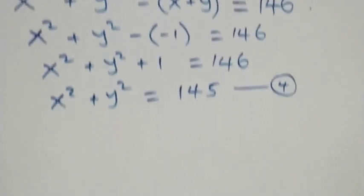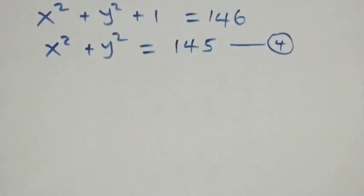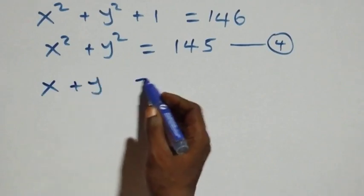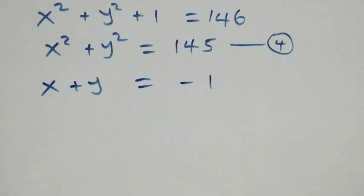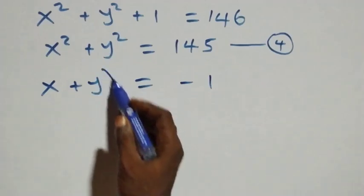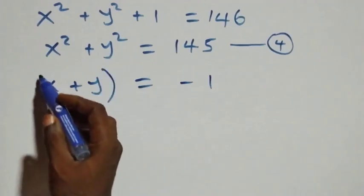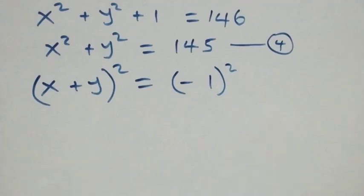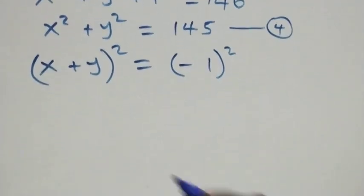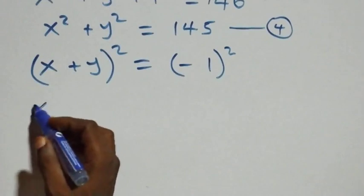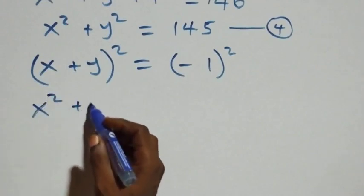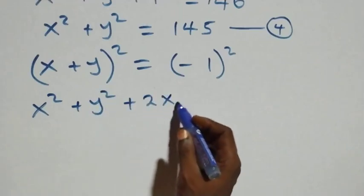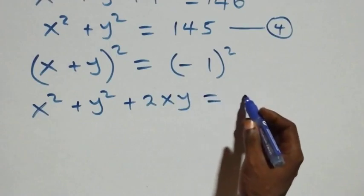Recall from equation three that x + y = -1. Now let's square both sides of equation three: (x + y)² = (-1)². The expansion gives x² + 2xy + y² = 1.